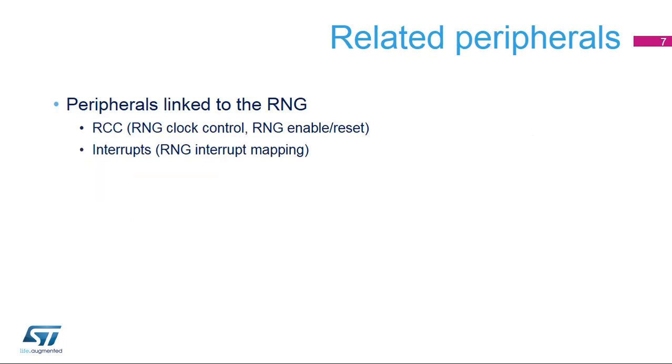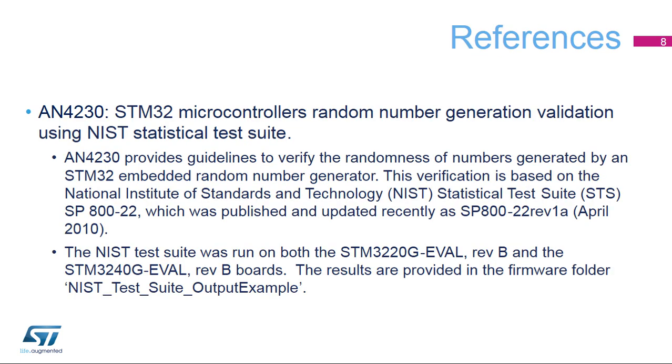This is a list of peripherals related to the random number generator. Please refer to these peripheral trainings for more information if needed. For more details, please refer to Application Note AN4230 about using the NIST Statistical Test Suite to validate the random numbers generated by STM32 MCUs.